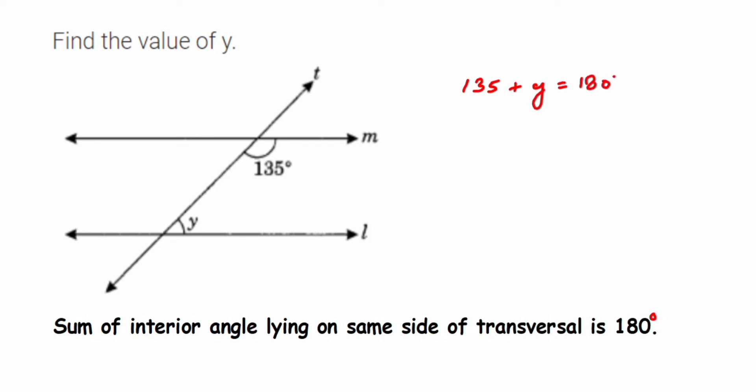Transpose 135 to the other side, so Y is equal to 180 degrees minus 135 degrees. Just subtract and we'll get Y equals 45 degrees. So the value of Y is 45 degrees.